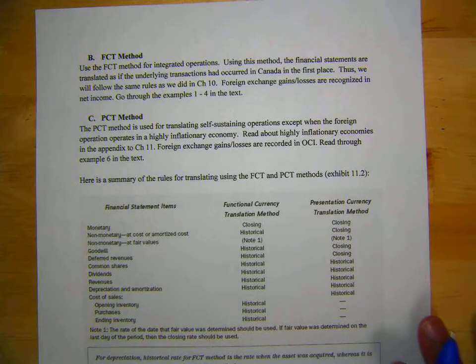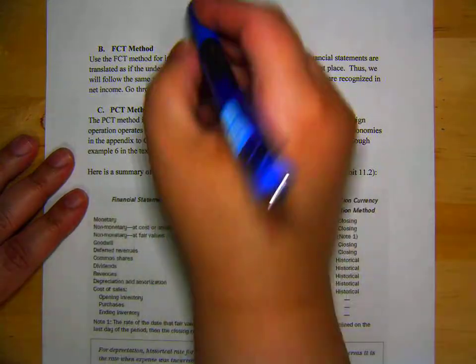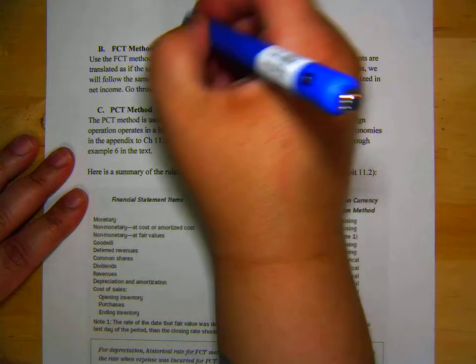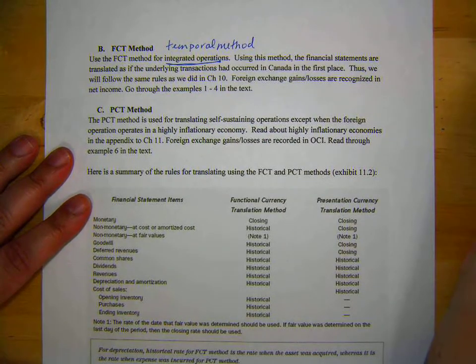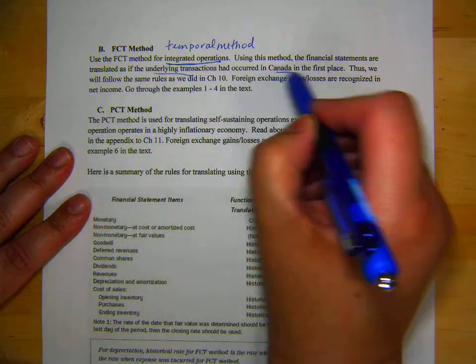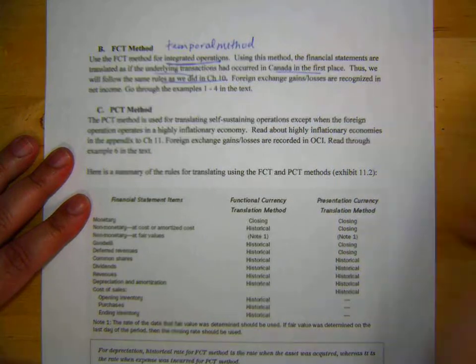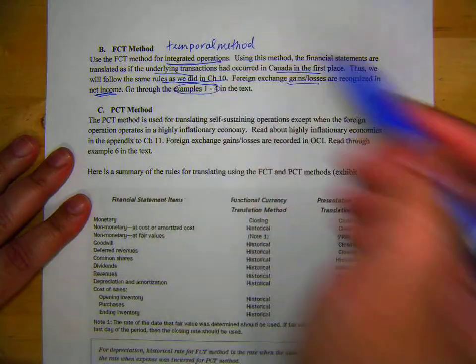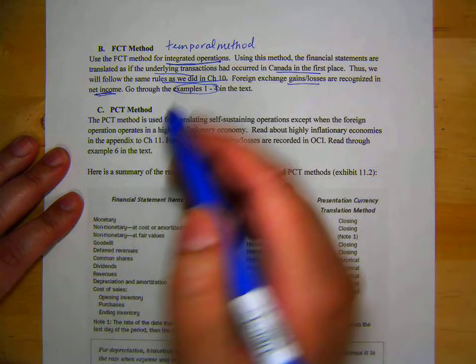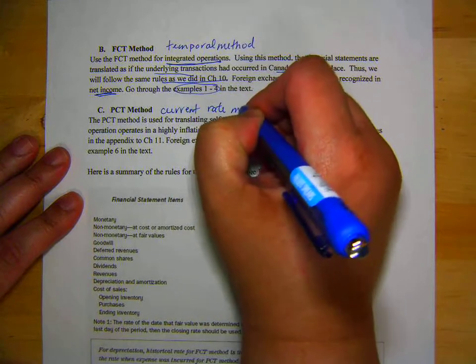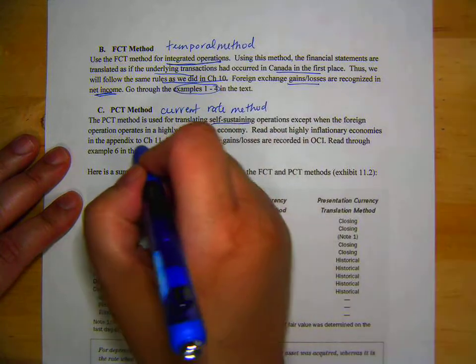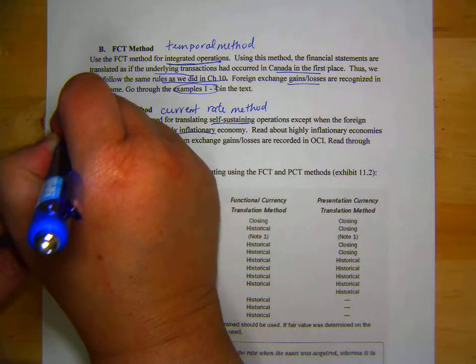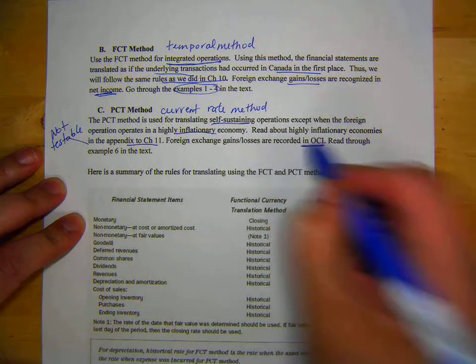So on page three, we talk about the FCT, just remembering. It's for integrated operations and it's also called the temporal method. So because they're integrated, we translate as if the underlying transactions had occurred in Canada in the first place. So this is chapter 10. Foreign exchange gains and losses are in net income. And you can go through examples one to four in your text. PCT method is also called the current rate method. PCT method is used for self-sustaining operations unless it's in a highly inflationary economy, which you can read about in the appendix to chapter 11. It is not testable. Foreign exchange gains and losses are recorded in OCI. Go through examples.